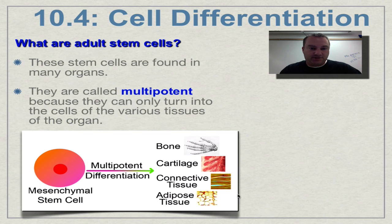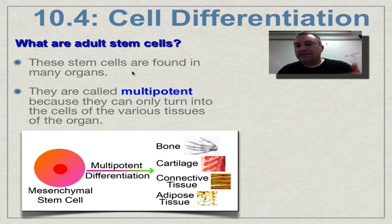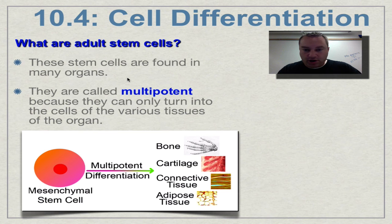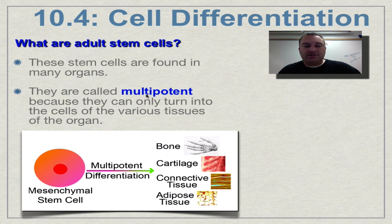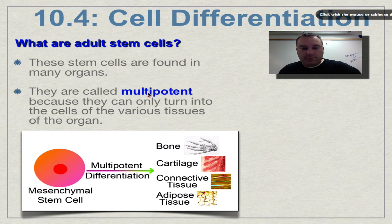Adult stem cells are stem cells found inside organs — they'll be stem cells inside the brain, your heart, and so on. Adult stem cells are multipotent.